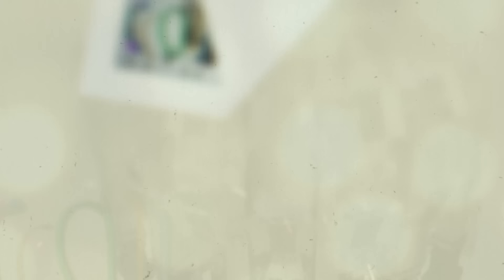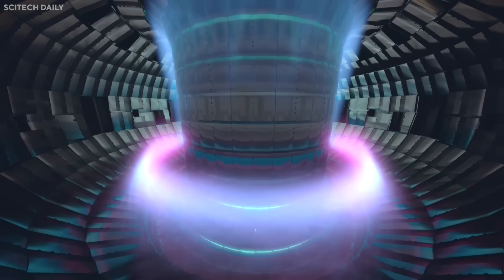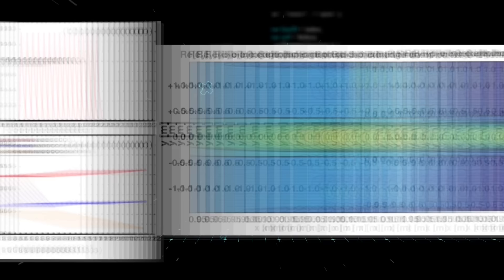The ITER tokamak will use superconducting magnets to create a toroidal magnetic field of 5.3 tesla and a poloidal magnetic field of up to 6 tesla, which will confine and shape the plasma. The ITER tokamak will also use various heating and current drive systems, such as neutral beam injection, radiofrequency waves, and electron cyclotron waves to heat and control the plasma.